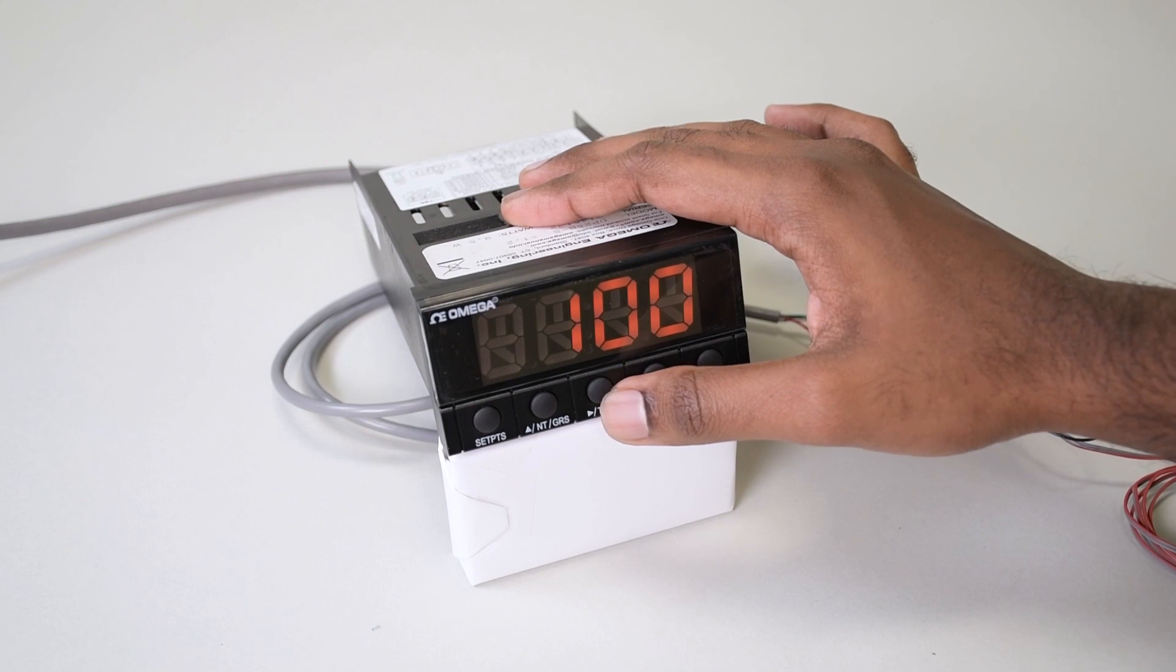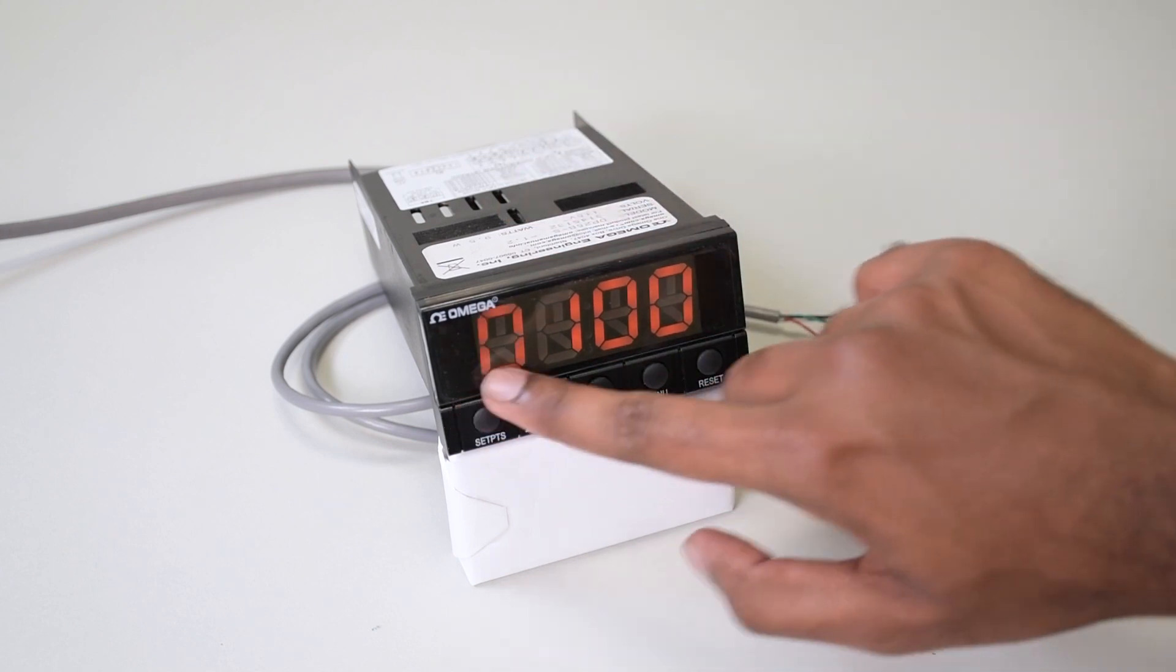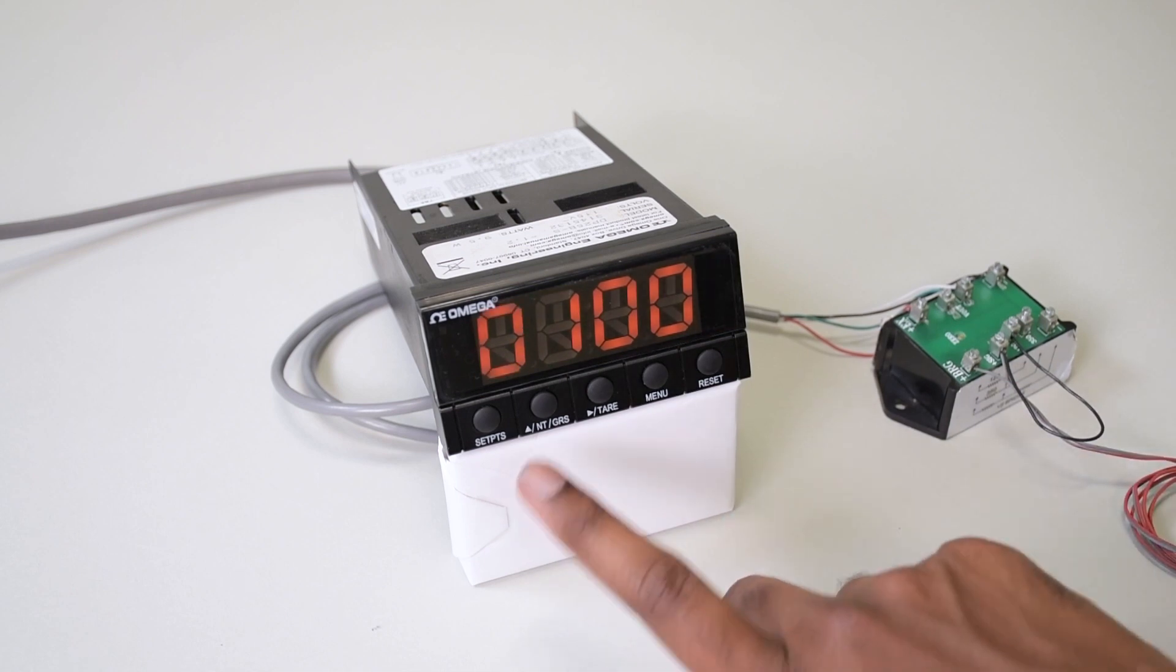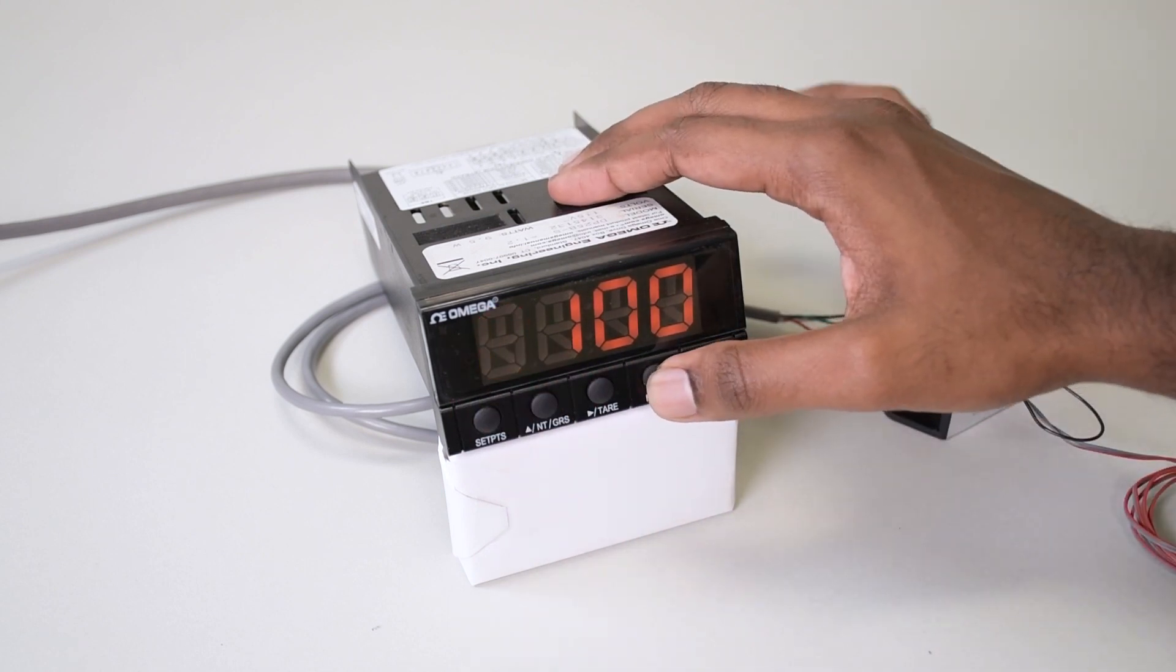Hit the tare button once. 99.99, close to 100. I have 100 listed here. If you don't have 100 and want to change it, hit the NTGRS button to change the value of the digits. Hit the tare button to scroll through the digits. Press menu button to save it.